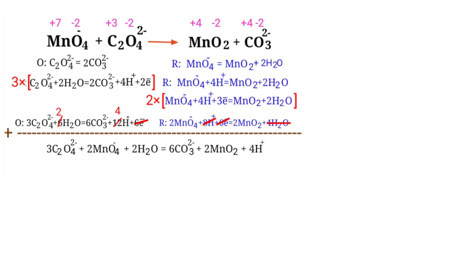For a reaction in a basic medium, add one OH minus for every H plus present in the equation. The OH minus must be added to both sides to keep charge and atoms balanced. Then combine the OH minus and H plus that are on the same side to form water.